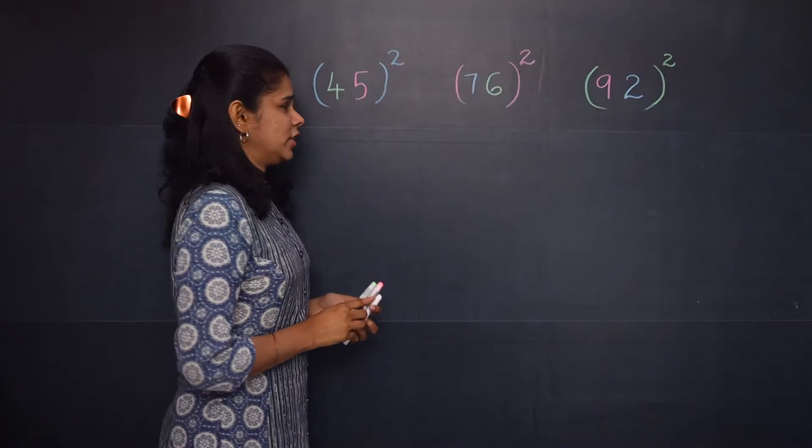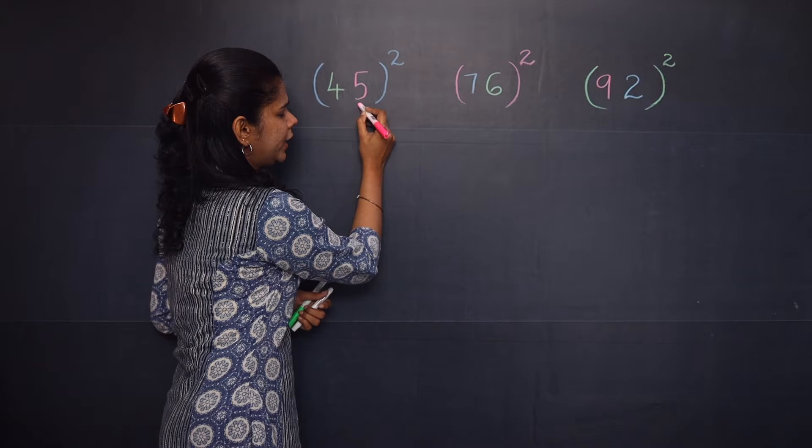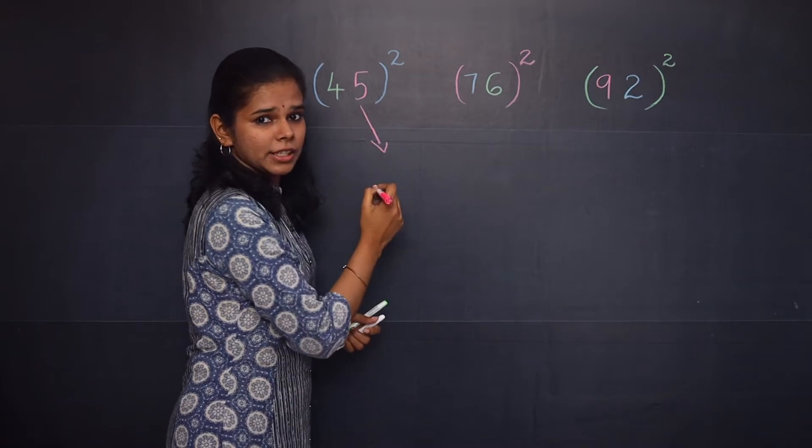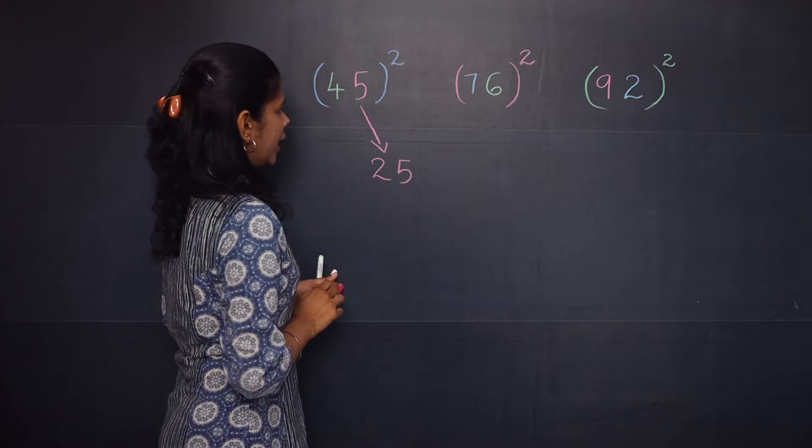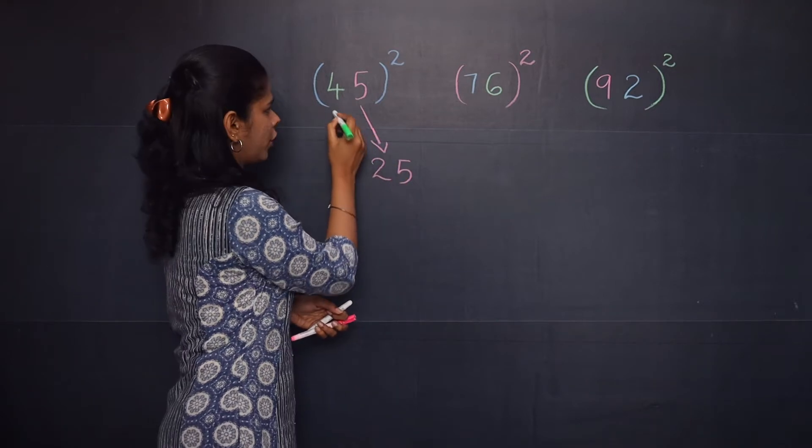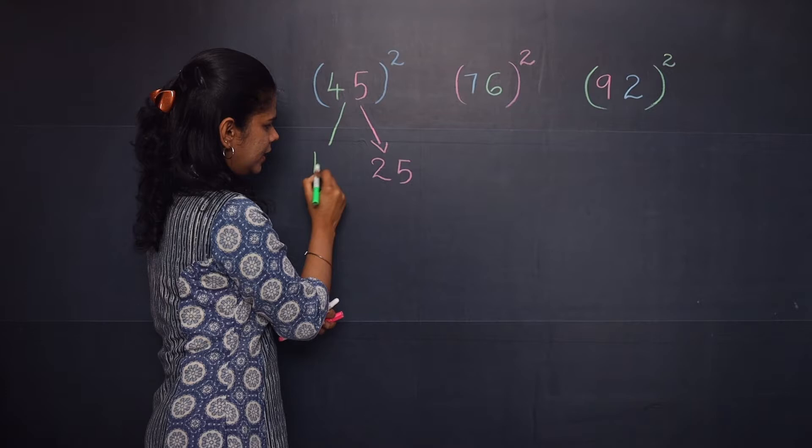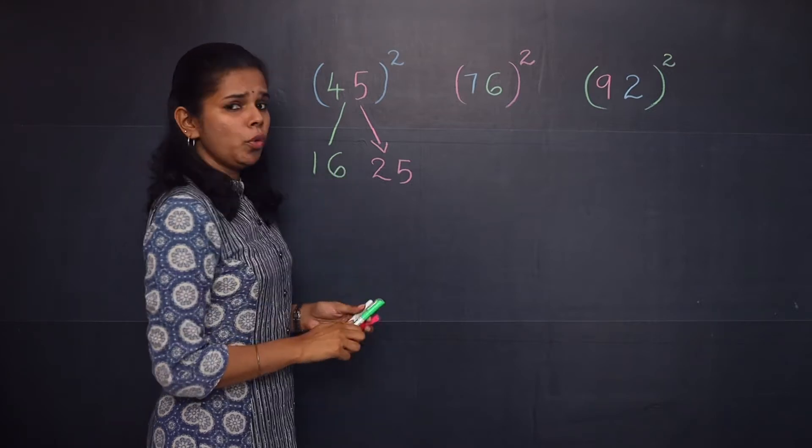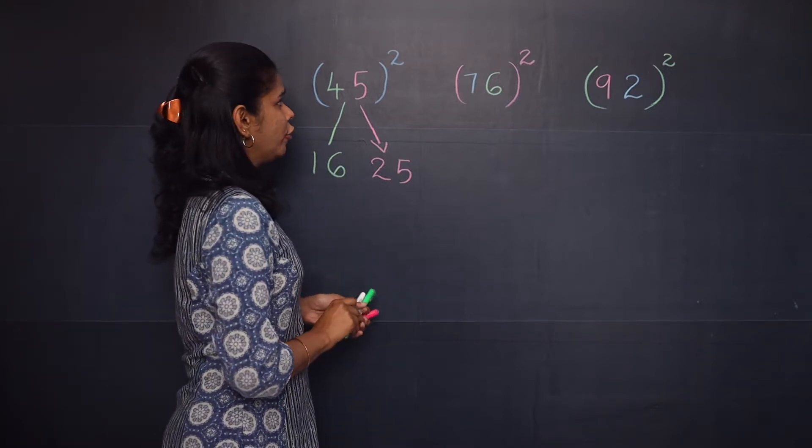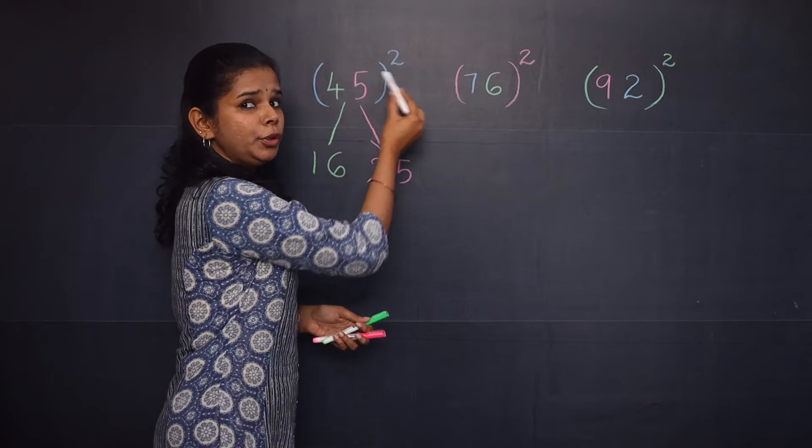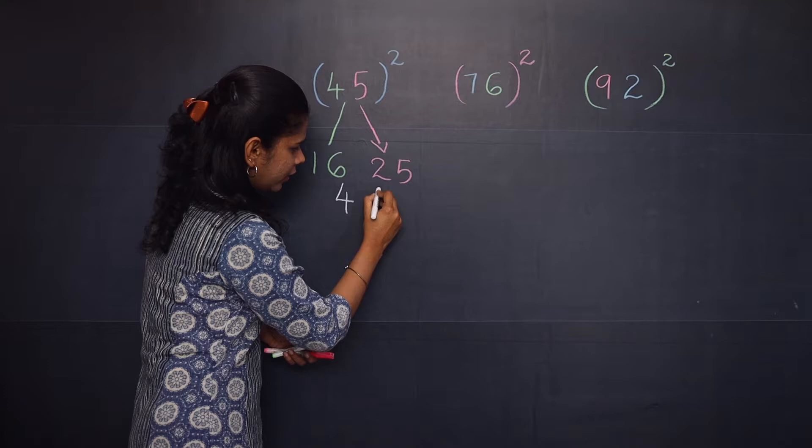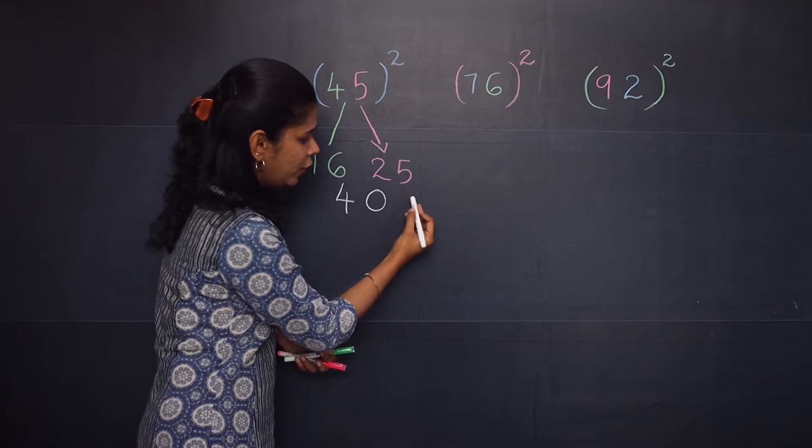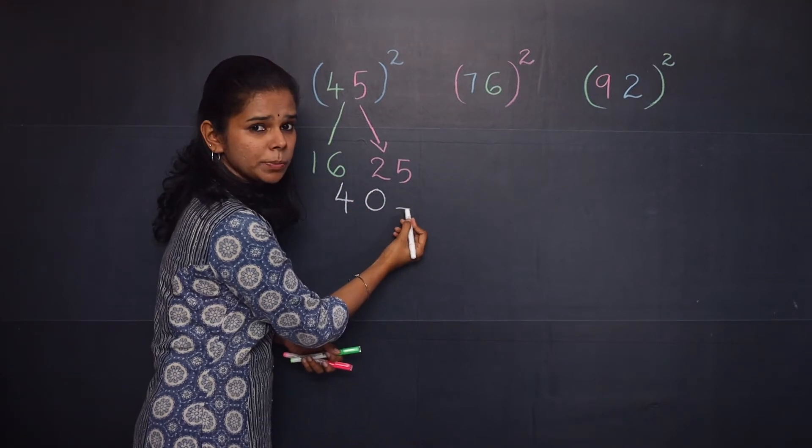Looking at the first question, what you need to do is take the square of 5 first, and that is 25. After that, you will take the square of 4, that is 16. Now you need to multiply 4 into 5 into 2, and it will give you 40. You will write it in the middle. You will always keep the units place vacant here.